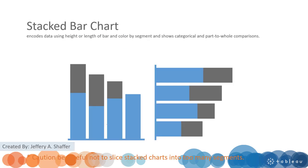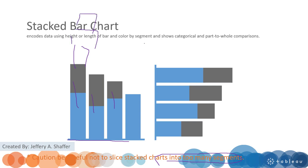We also have the stacked bar chart, which is used to show different categories within each single bar. We have multiple categories, but they all come from a common baseline, making it easier to compare. However, be cautious — you should not have too many segments, as having a lot of categories makes it very hard to compare.